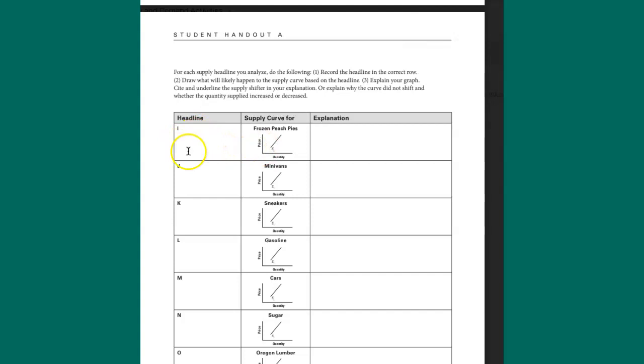So you put that here, record harvest of peaches, and then an explanation should be something like the supply curve will increase to the right because there is a low cost for peaches to make peach pies. So the factor that determines that is known as input prices or the costs of production or ingredients to produce the good.